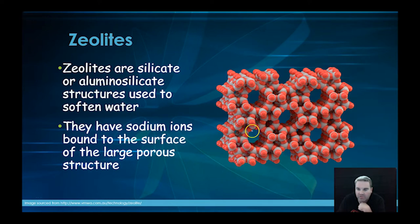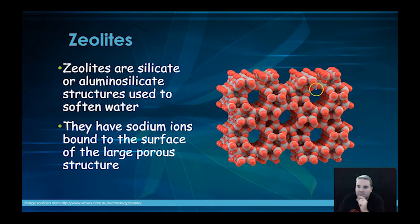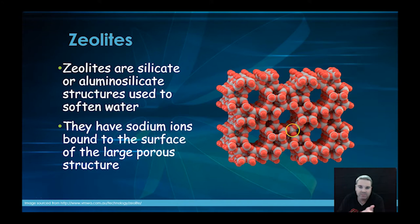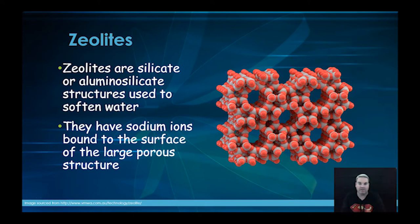The pale-coloured ones are silicon and the red ones on the outside are oxygens. We've created this big porous structure with lots of holes in the middle which increases the surface area for water to come into contact. The surface of these zeolites has sodium ions bound on them — they're silicates with a negative charge and they've got sodiums on the surface.